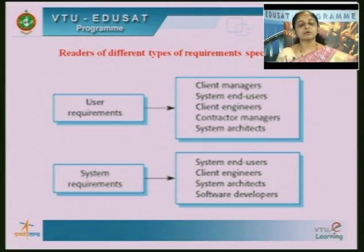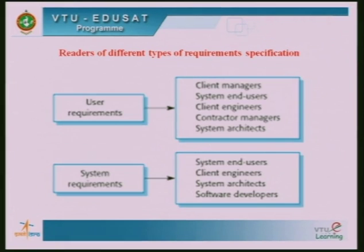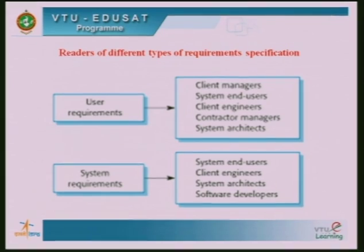It is very important to write the requirements document in different levels of detail, because different types of readers will read these documents. Each reader will have a different view of the software and will understand what they want from the system by reading these requirements. So we write the requirements document in different types of detail. Who are these different types of readers of the requirement specification?